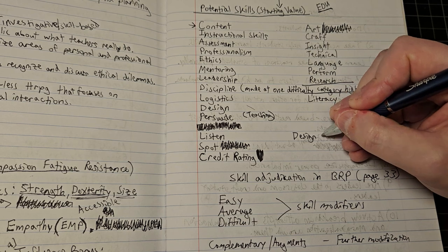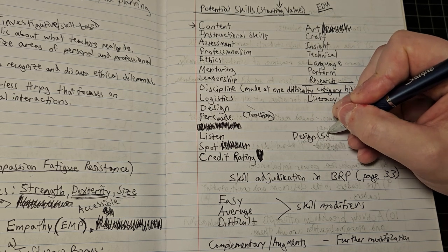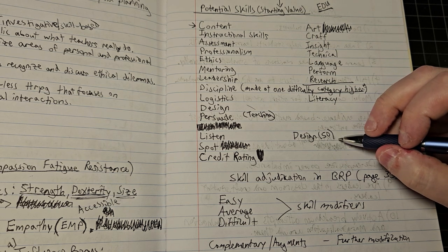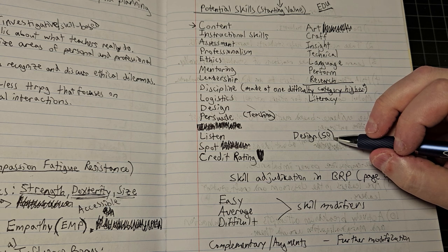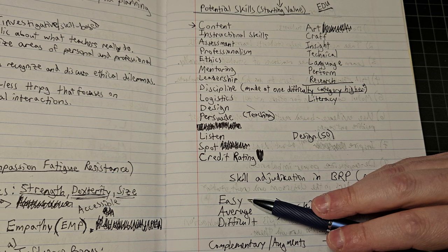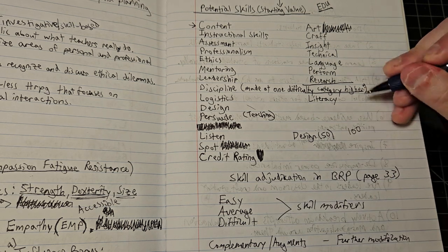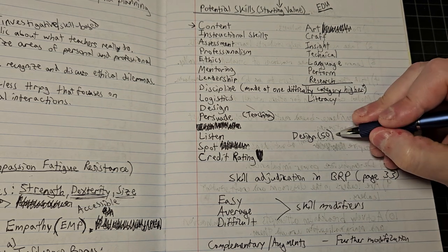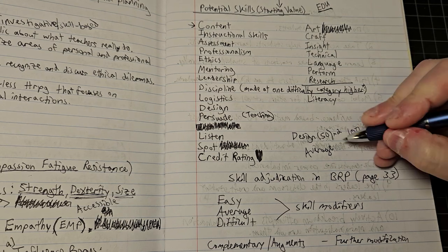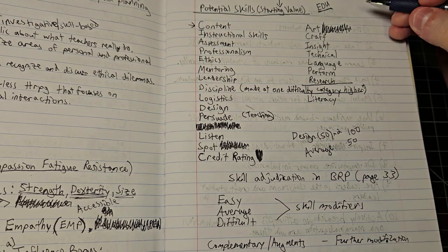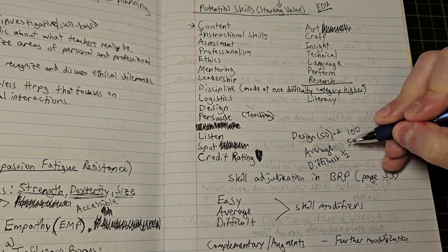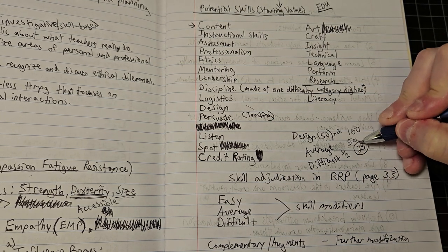For example, let's say that I'm trying to design a very difficult set of curricula - it's a concept that is very difficult for students to understand and my design skill is at 50. If I set that difficulty for the design at 100, the player would try to roll under 100, in other words double the skill value. If I set the difficulty at average, they would just roll a base of 50. And if I set the difficulty of the task at difficult, they would try to roll under 25.